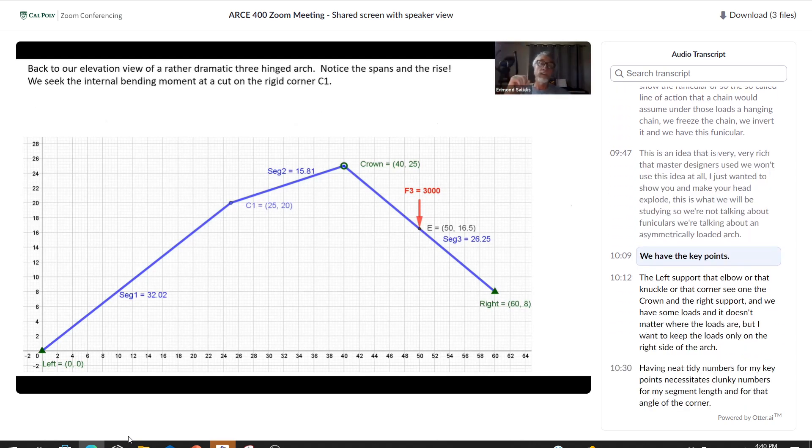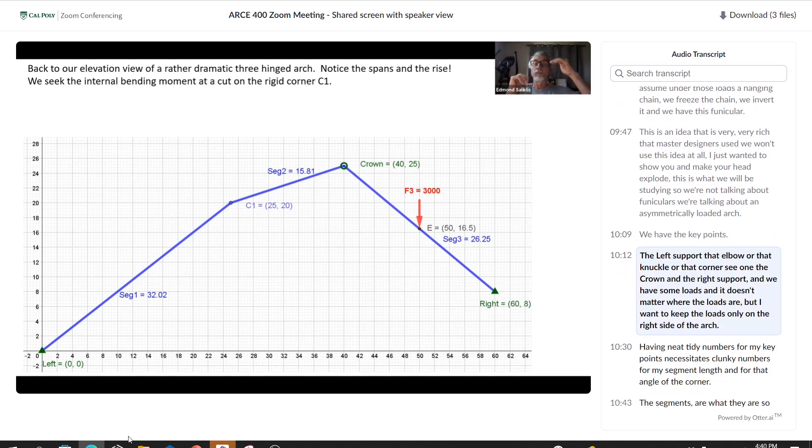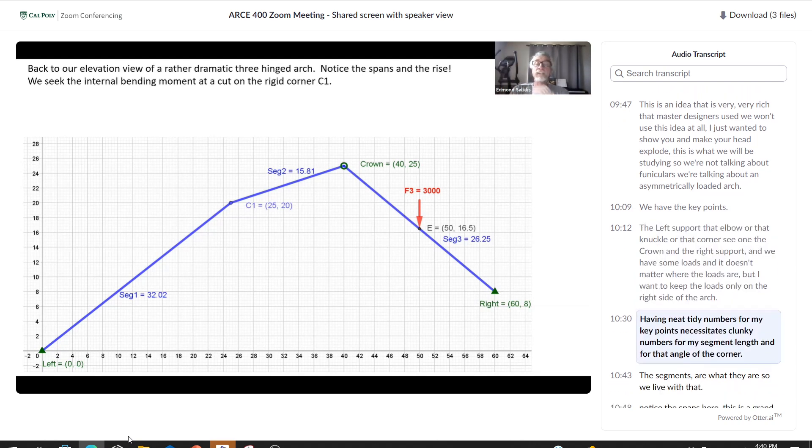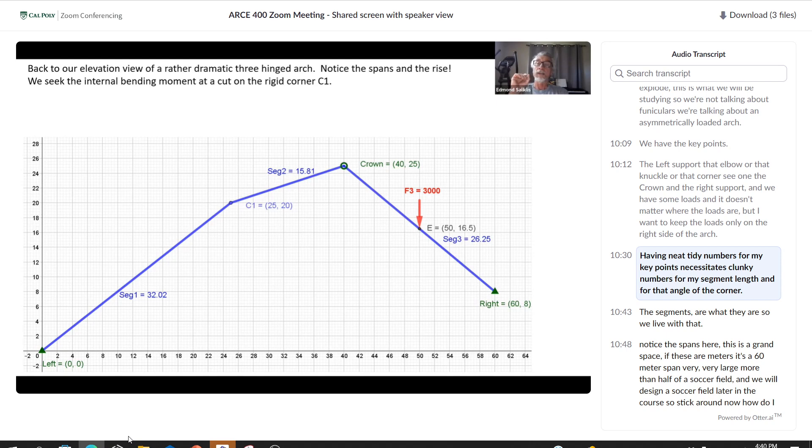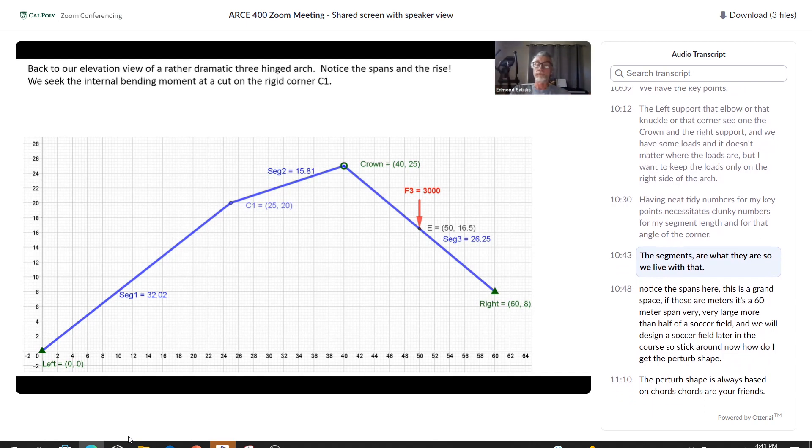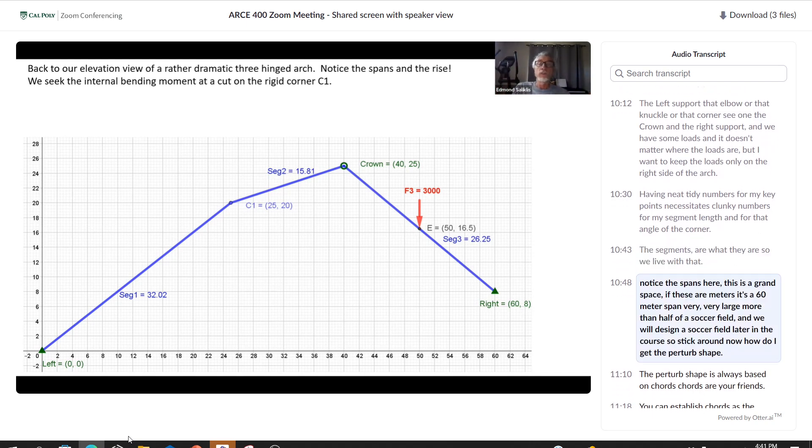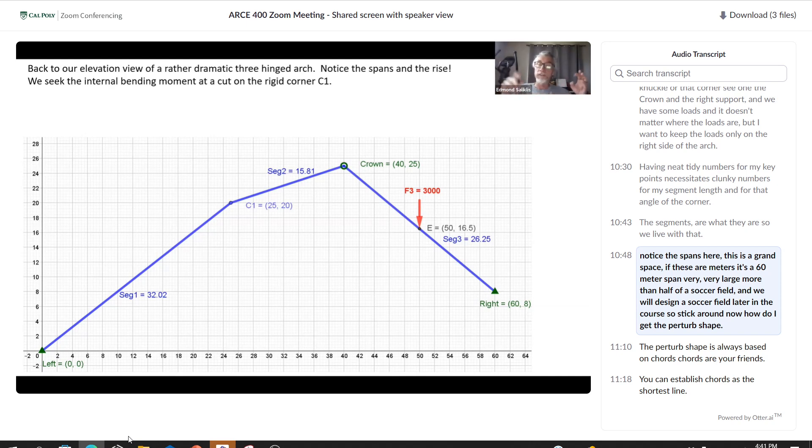We have the key points: the left support, that elbow or knuckle or corner c1, the crown, and the right support. We have some loads and it doesn't matter where the loads are but I want to keep the loads only on the right side of the arch. Having neat tidy numbers for my key points necessitates clunky numbers for my segment lengths and for that angle of the corner. Notice the spans here. This is a grand space. If these are meters, it's a 60 meter span, very very large, more than half of a soccer field.